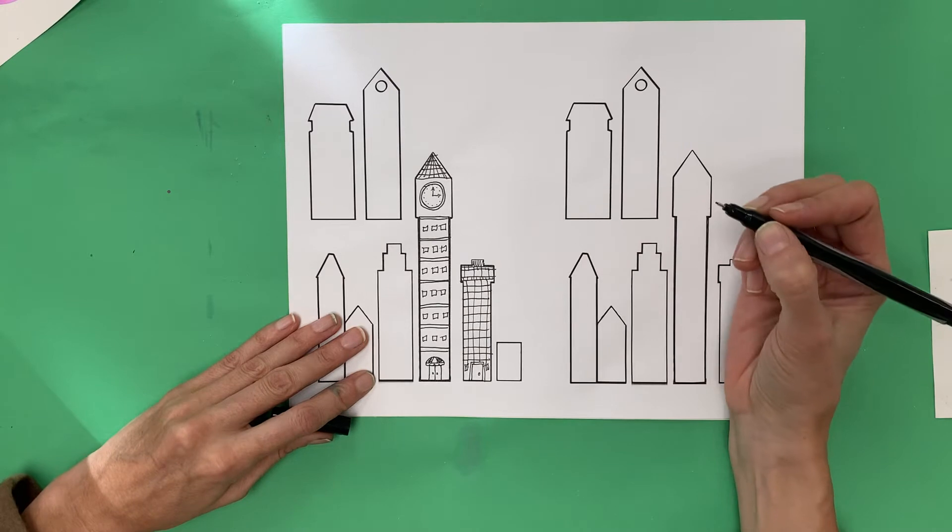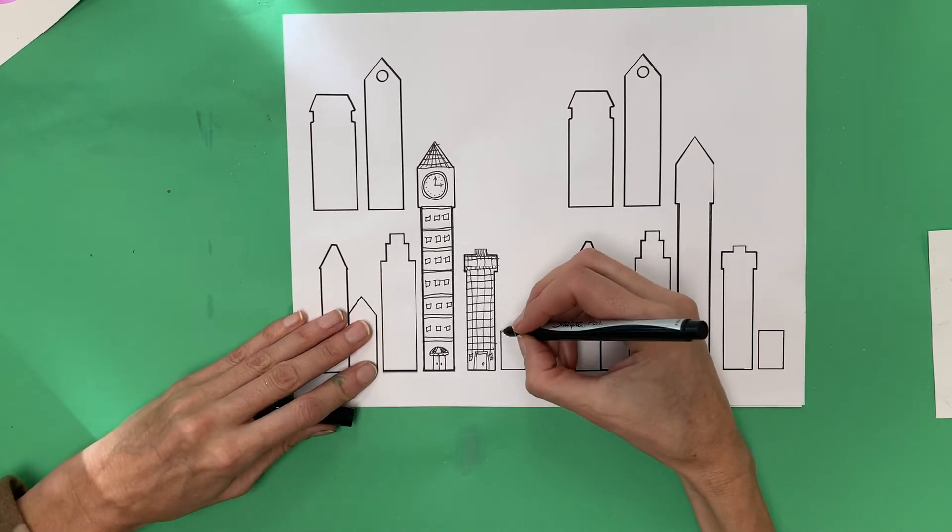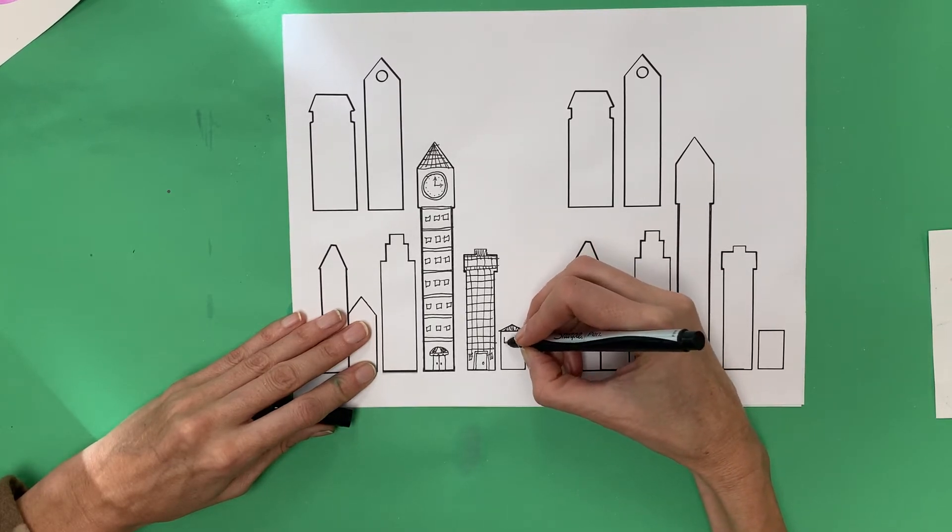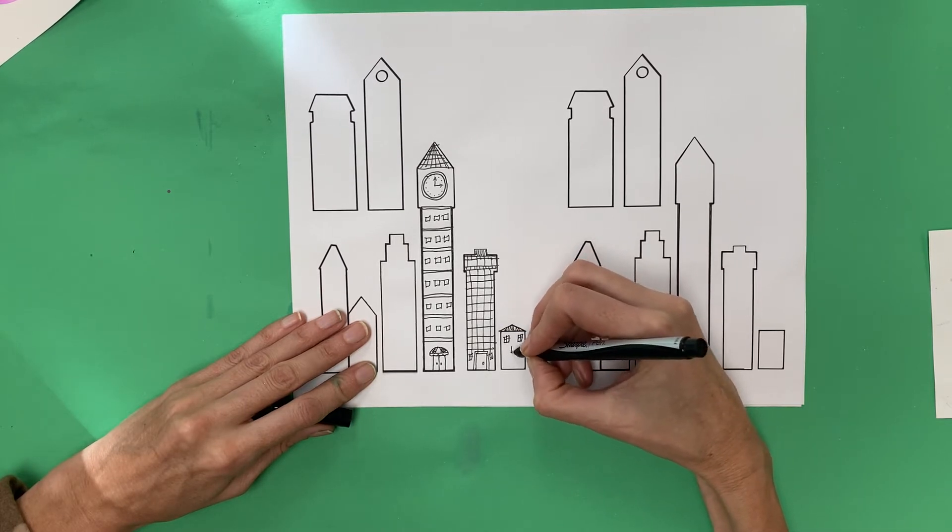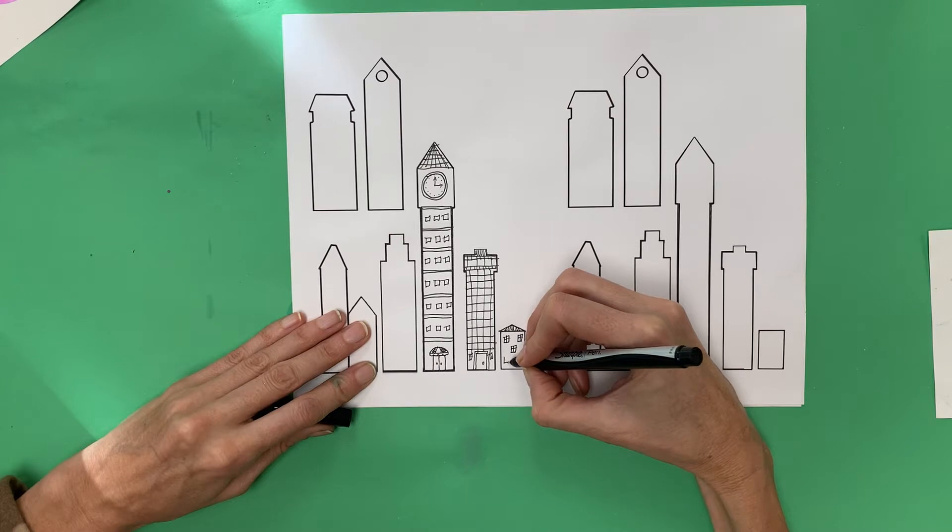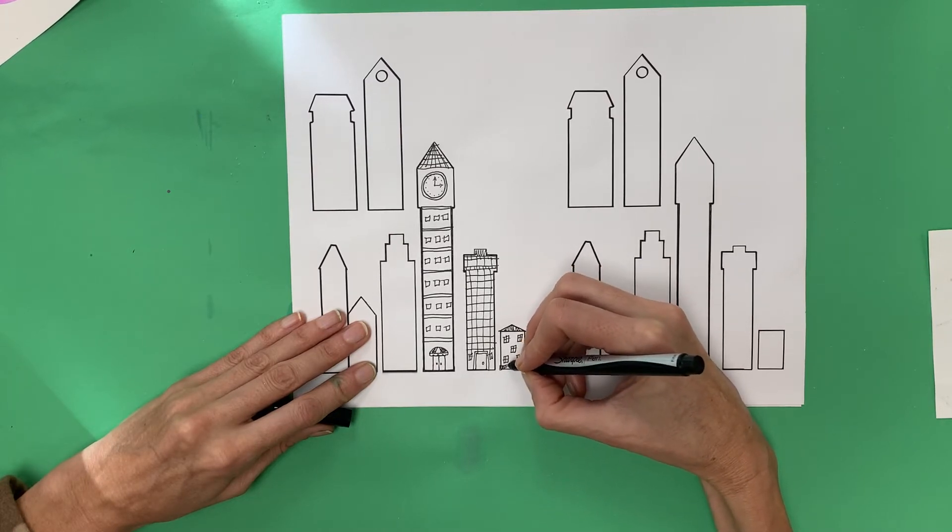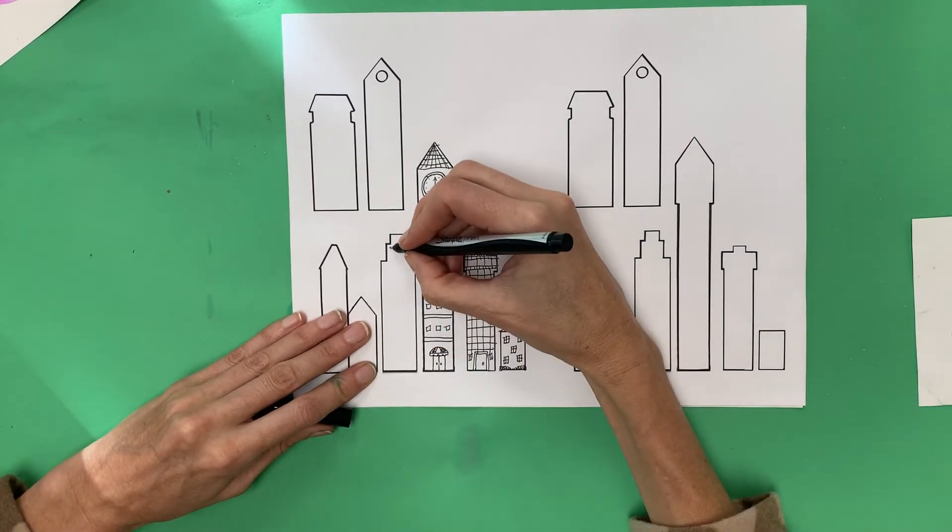So this is one way to make windows. Do something different for each building though, try and make it look different. How about this little guy here? Maybe I'll put a tiny little roof on it. You can add to it too, you don't have to use the shape that's already there. I'll make this look like a little house. You don't have to do what I'm doing to your buildings. If you have a different idea, do that idea. There's just some bushes in front.